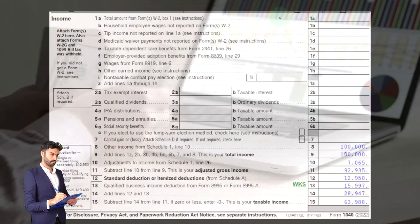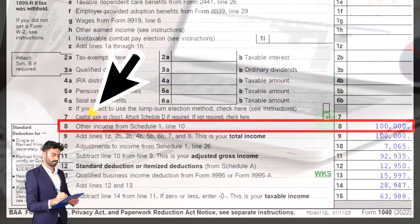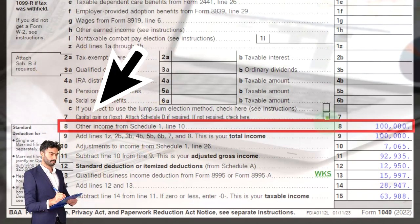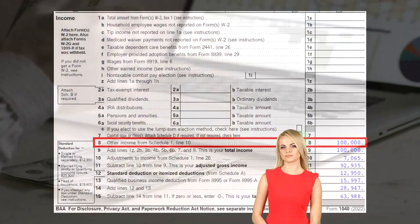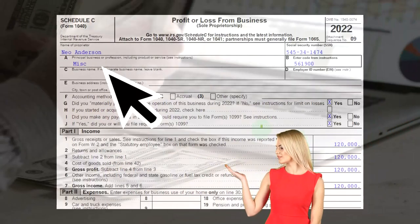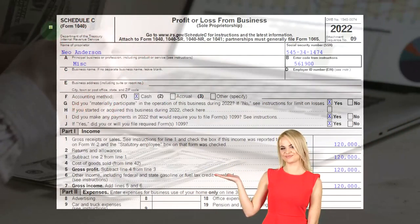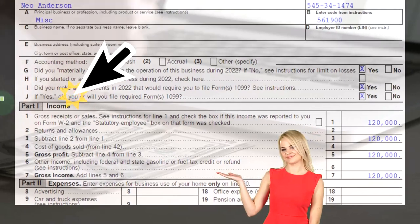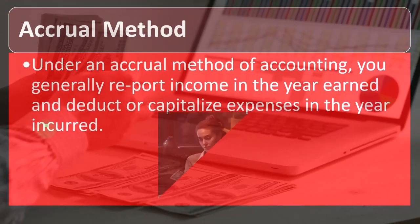This is the first page of the Form 1040. We're looking at line number 11 — Schedule C flowing into the Schedule 1, flowing into the first page of the 1040 on line number eight. This is a Schedule C, Profit or Loss from Business, where we can see the income and the expenses — in essence, an income statement.